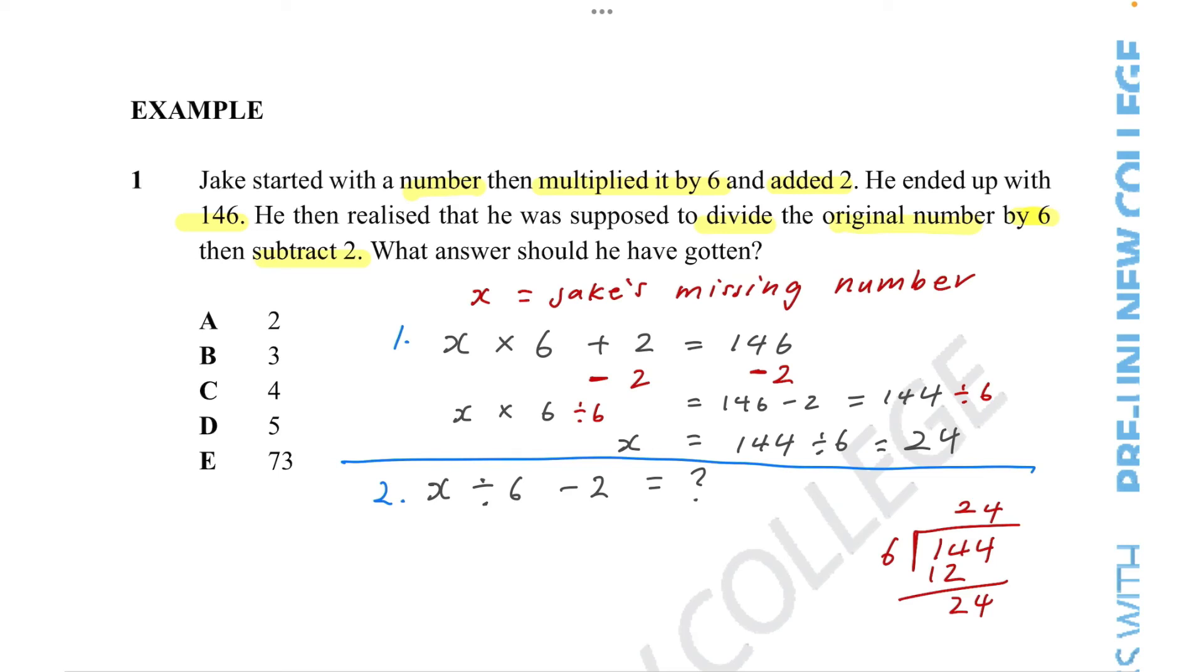All we need to do now is insert the 24 into the x in the second equation. So instead of x, now we know what x is. So we can go 24 divided by 6 minus 2 equals what? If we do BODMAS, which means divide goes first, we just divide 24 divided by 6, which we know is 4. And then we minus 2. 4 minus 2 is 2. And now we have the answer.